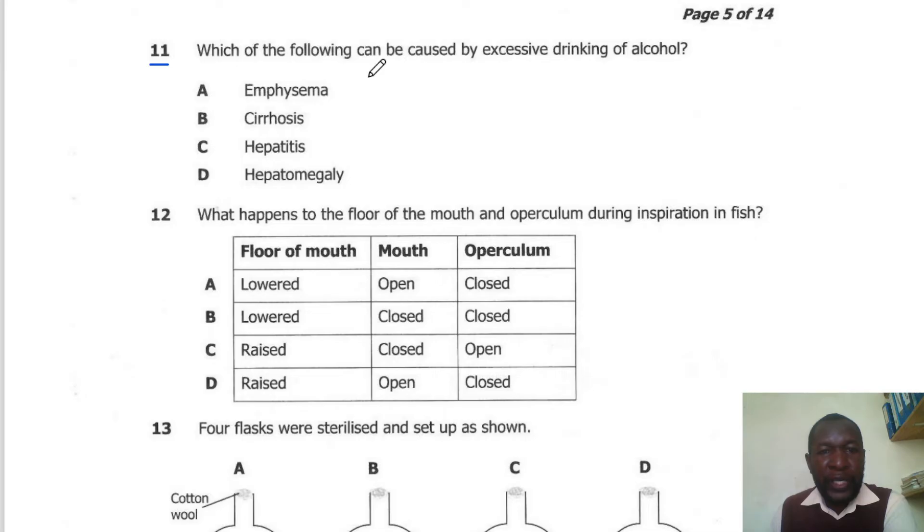Question 11. Which of the following can be caused by excessive drinking of alcohol? Excessive drinking of alcohol causes liver cirrhosis, which is D.